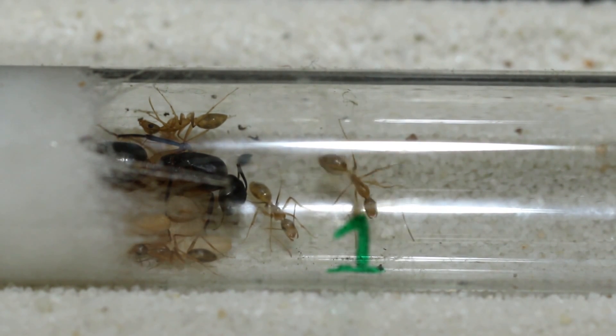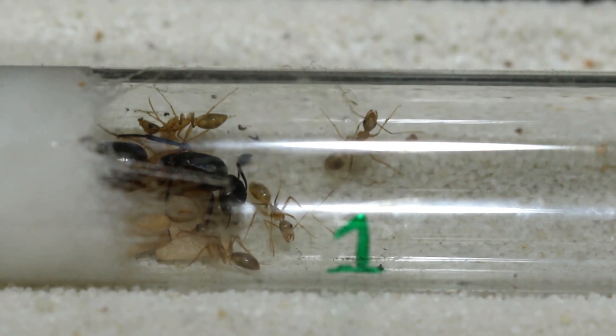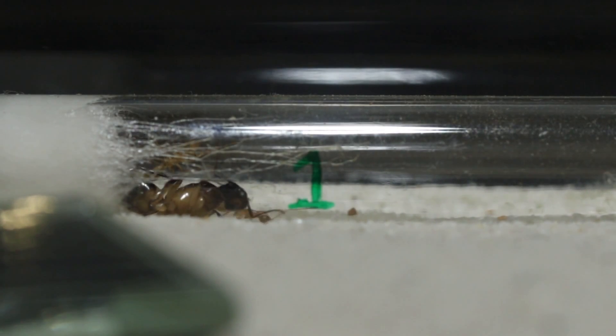You can now leave them for a day or two before you start feeding them. You can then start feeding them a small drop of honey or some crushed insects, because you don't want to feed these small guys live insects. If the insect is too big, the ants might get hurt.